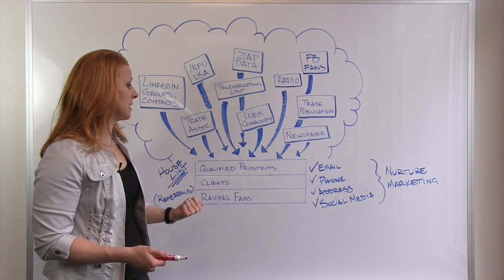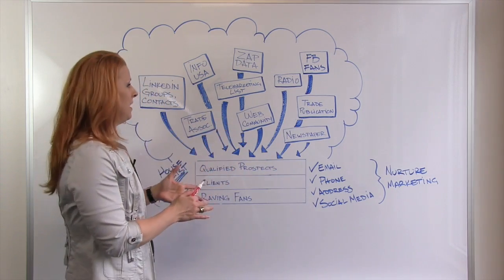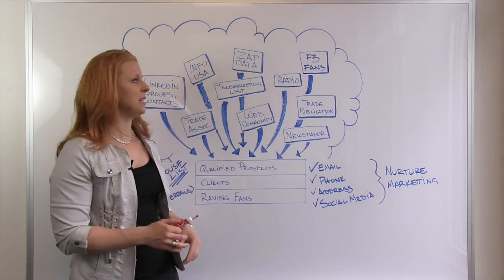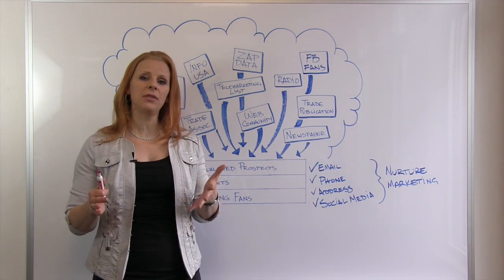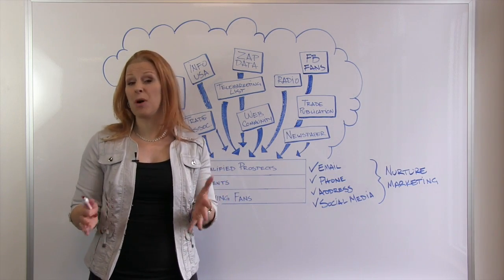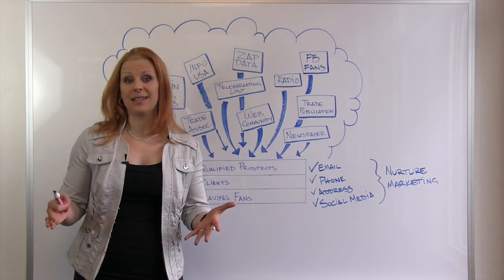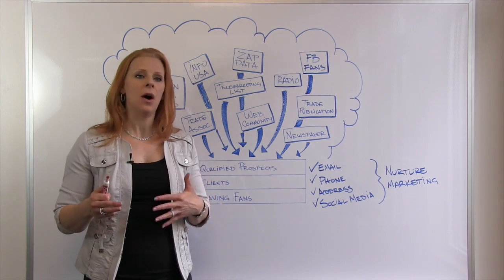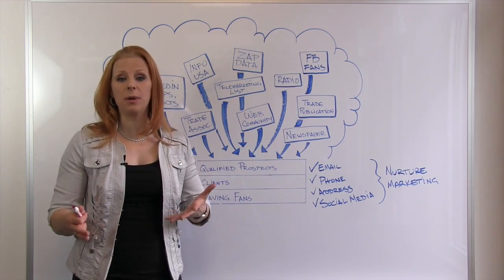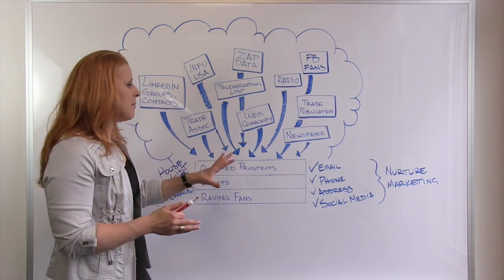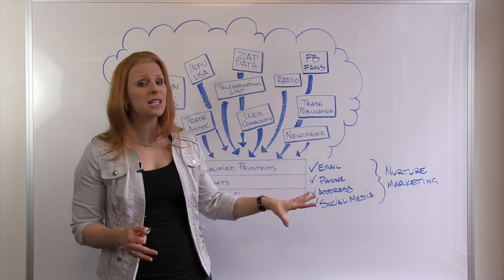What you see behind me is not my handiwork — I drew it on a piece of paper like a napkin and got my graphic designer to do this. I got him to draw this out to explain how the process of list building works. Because most people, when they say they want a list, what they mean is they want an email list. And that's not necessarily always the best way to go about prospecting. Let me explain how you build your email list or just how you build your prospect list.